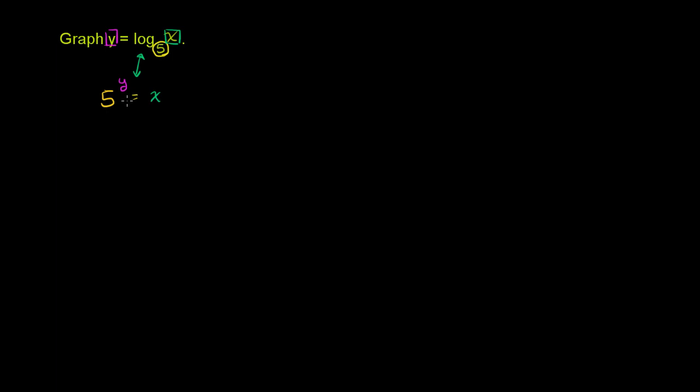These are the same thing. Here we have y as a function of x; here we have x as a function of y, but they're saying the exact same thing. When you put it as a logarithm, you're asking: what power do I have to raise 5 to in order to get x? The answer is y. Now, with that out of the way, let's make a table to plot some points and then connect the dots to see what this curve looks like.